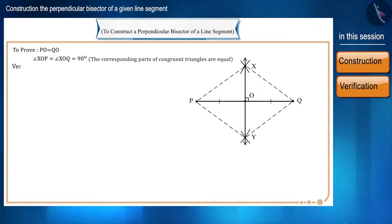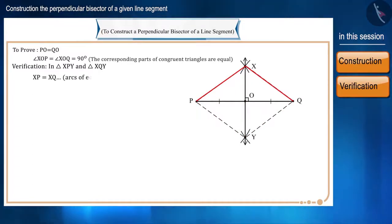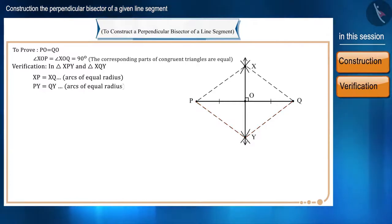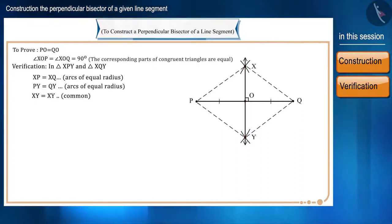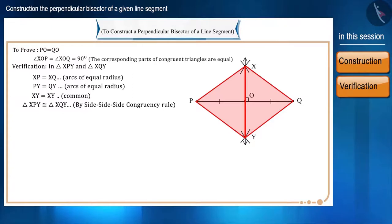In triangle XPY and triangle XQY: side XP equals side XQ because these are arcs of equal radius; similarly, side PY equals side QY because these are arcs of equal radius; and side XY equals side XY as it is the common side. Therefore, triangle XPY and triangle XQY are congruent by the Side-Side-Side congruency rule.